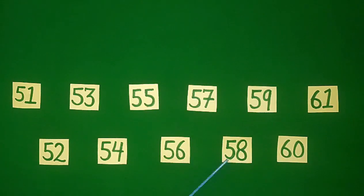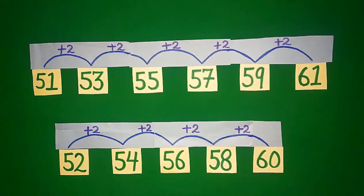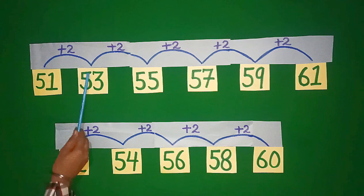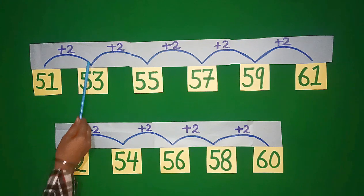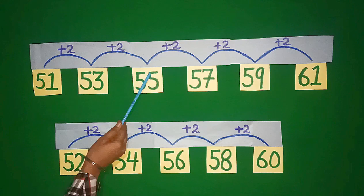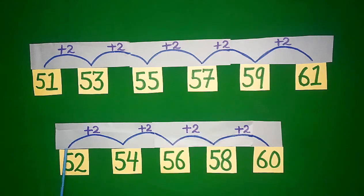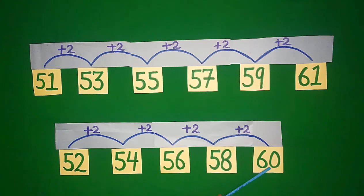In the same way, below we have another pattern. Look at this pattern carefully. In this pattern, when we add two digits to 51, we have the next number 53. We add 2 to the number 53 and then the next number is 55. And so this pattern is moving forward. In the same way, the following pattern is also adding two digits, so these patterns further grow in this manner.